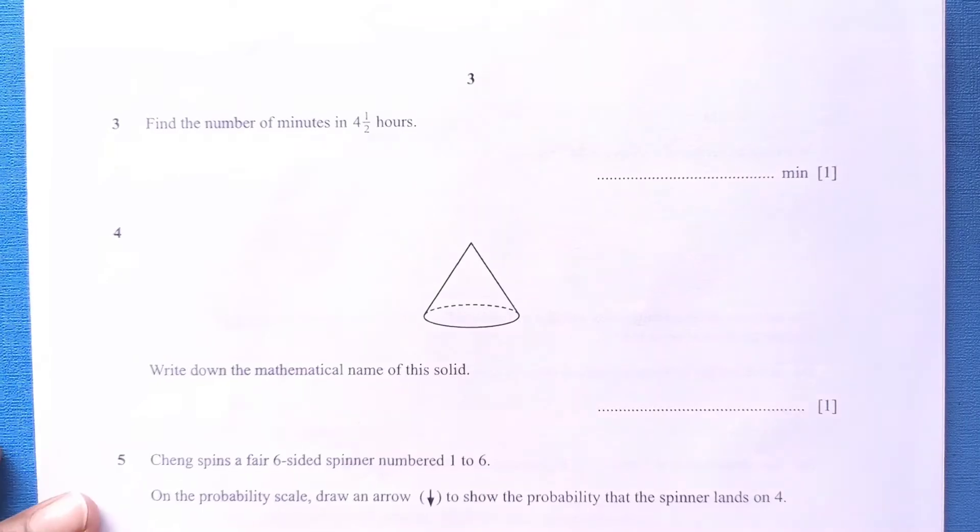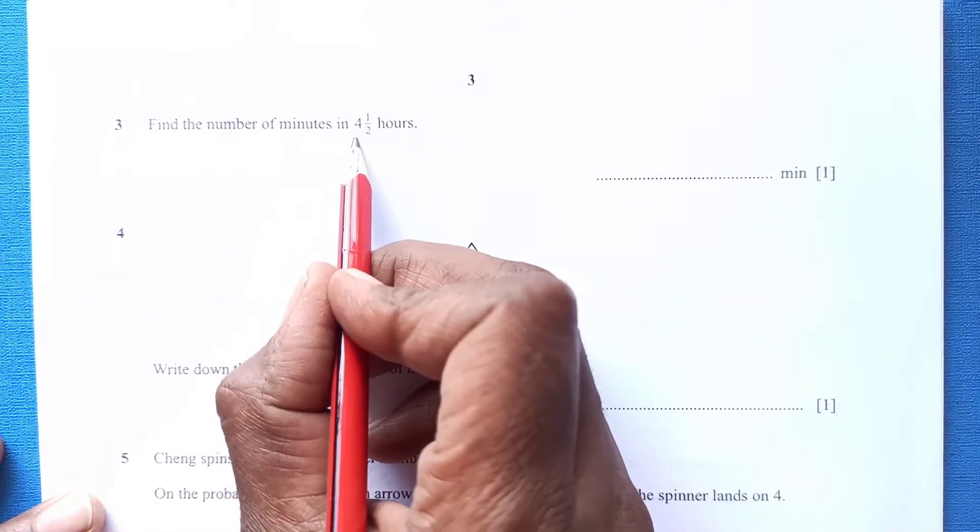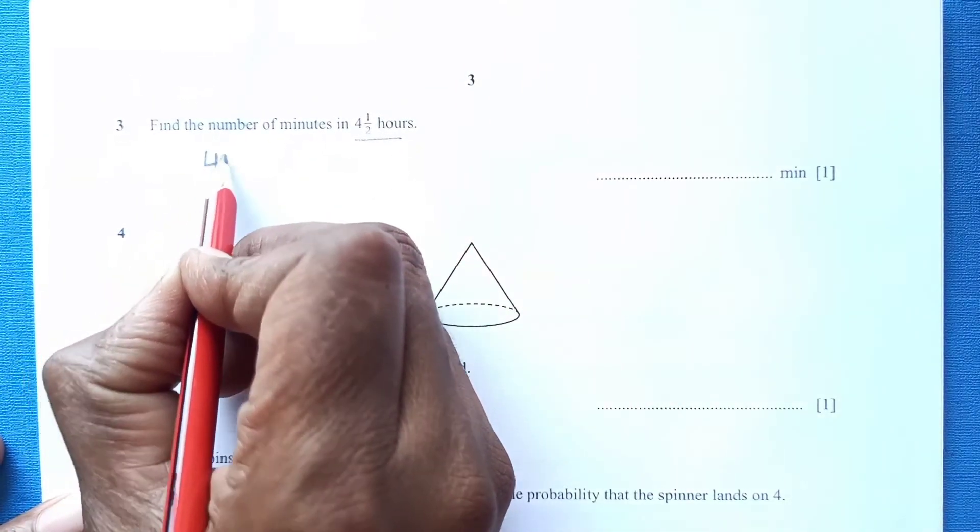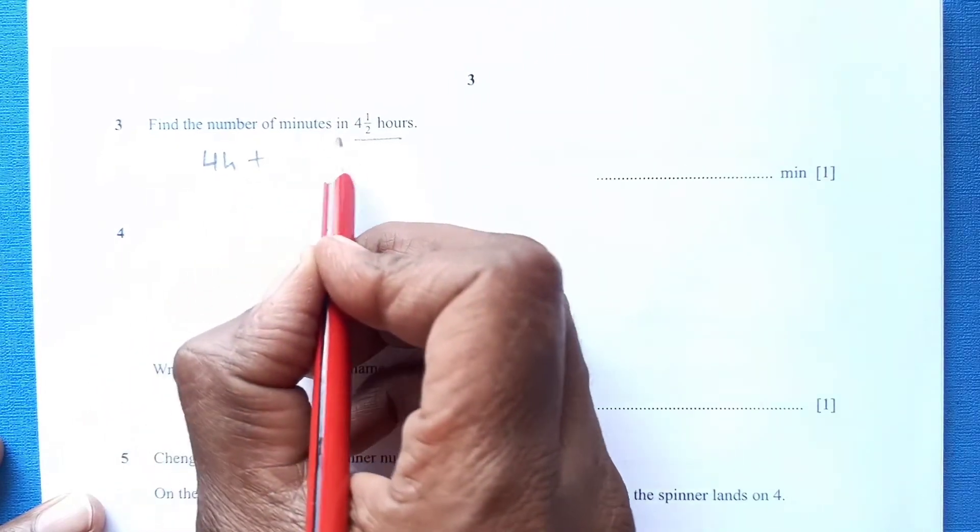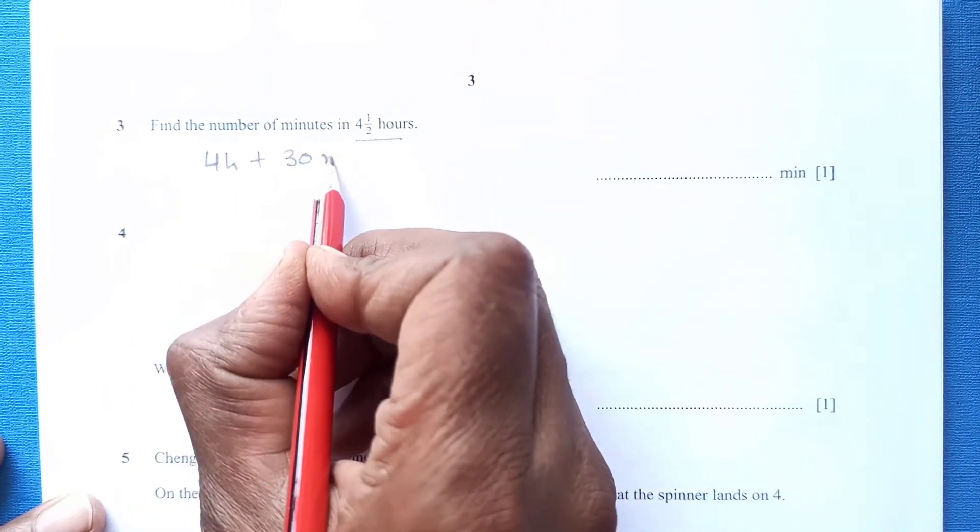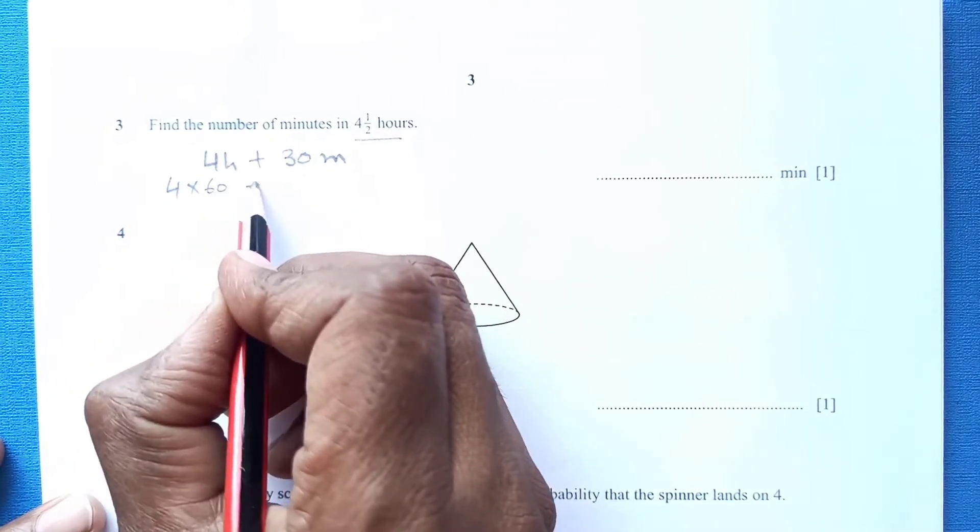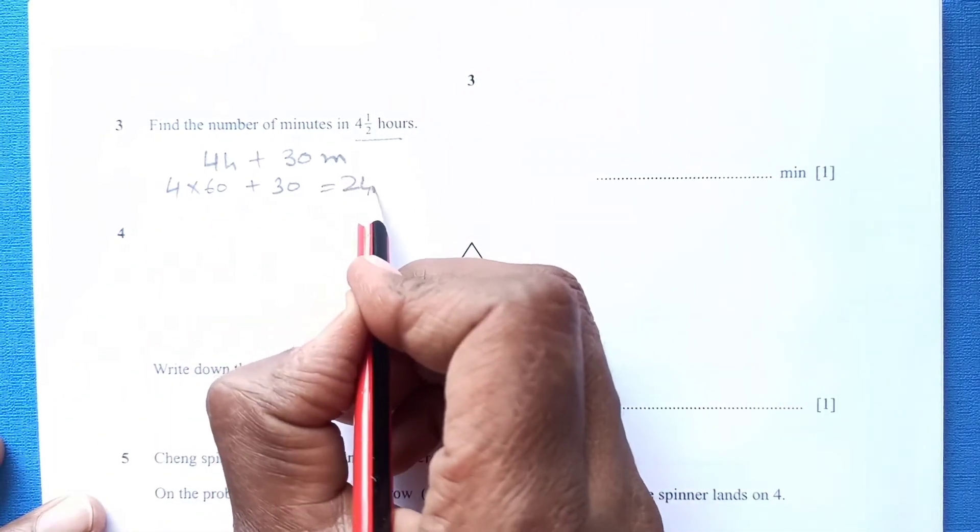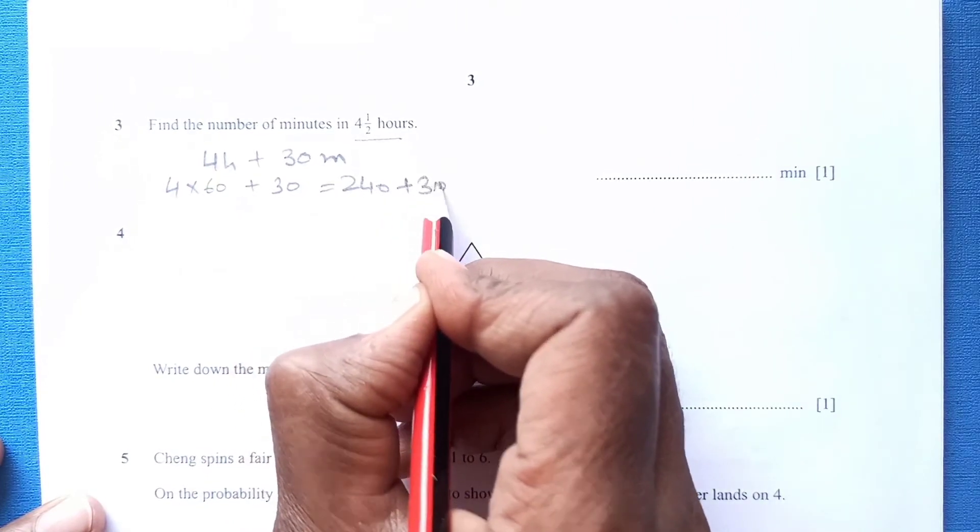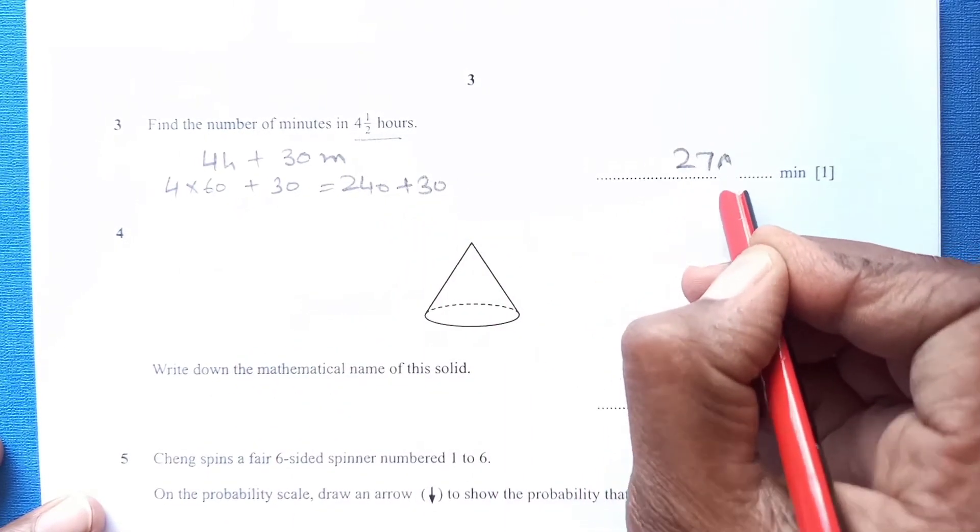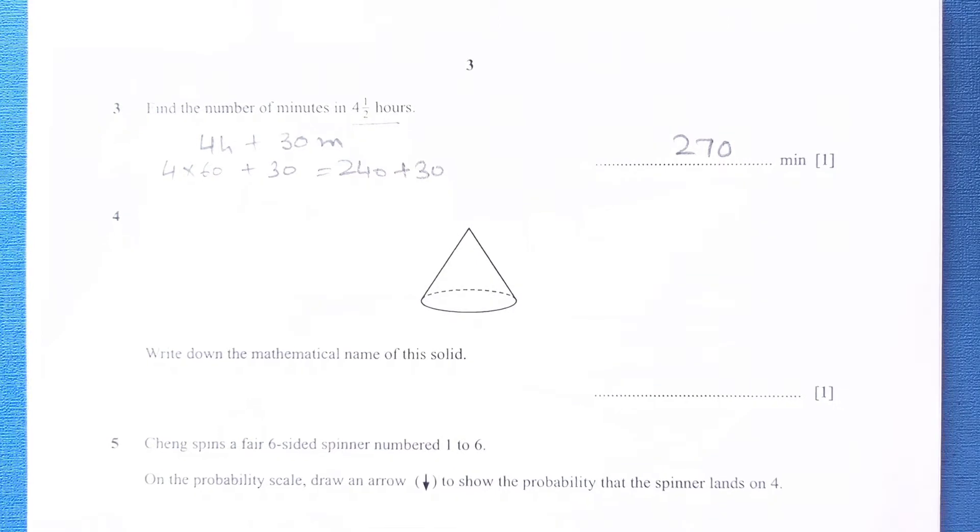Question number 3: Find the number of minutes in 4 and half hours. We have 4 hour plus half hour. Half an hour is 30 minutes. 4 hour is 4 times 60 plus 30. This is 240 plus 30. In total it is 270 minutes.